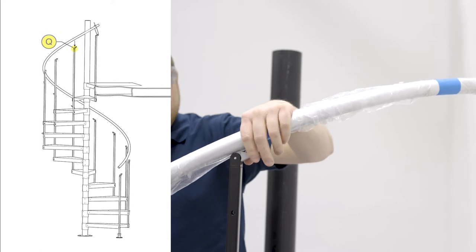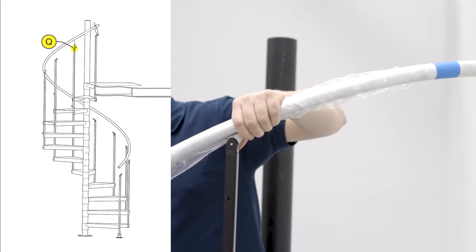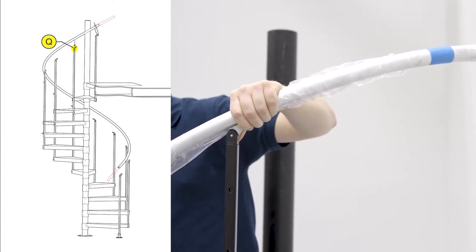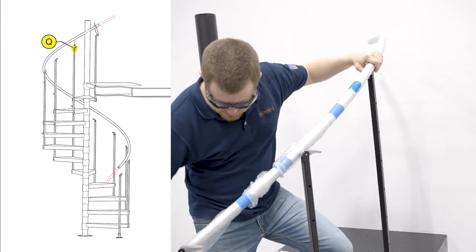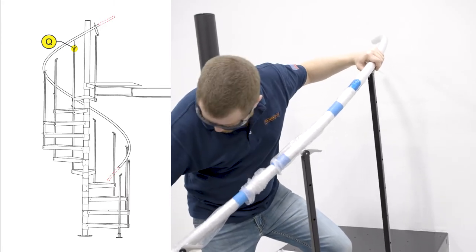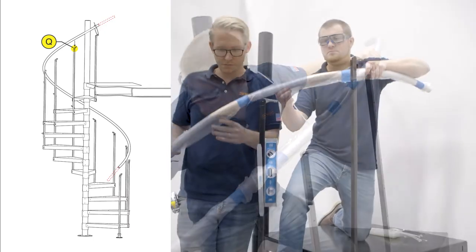Rest the handrail on the flipper heads Q, adjusting to ensure an even amount of overhang. If the shape of the handrail does not follow the angle of the spindles, take it back down and make further adjustments.